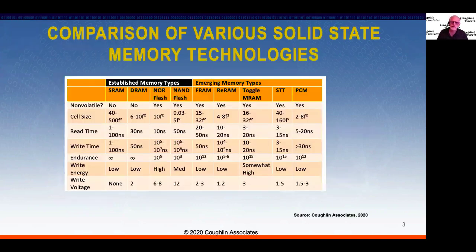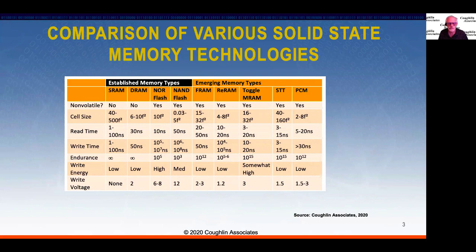Let's do a comparison of various solid-state memory technologies. This table is from the report that Jim Handy and I have done on emerging memory technologies, called 'Emerging Memories Find Their Direction.' On the left-hand side are established memory types including static random access memory, dynamic random access memory, NOR flash, and NAND — these are in higher volume production. On the right-hand side are more emerging memory types in lower levels or pre-production volumes, both standalone and embedded memory products.